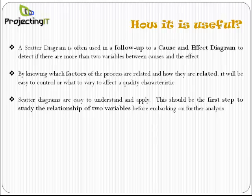Scatter diagrams can help to test or validate the relationship. By knowing which elements of the processes are related and how they are related, it will be easy to focus on those causes or factors to control the effects.